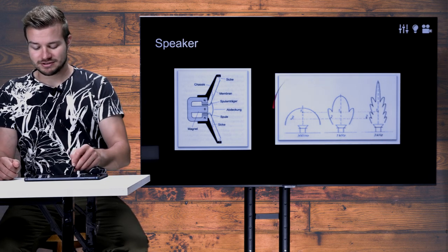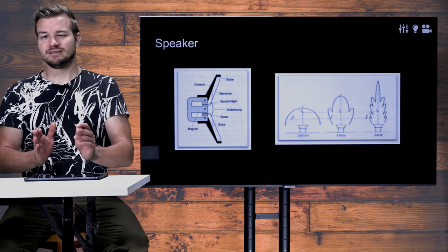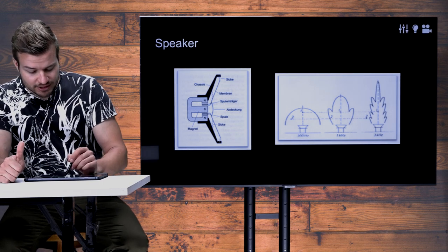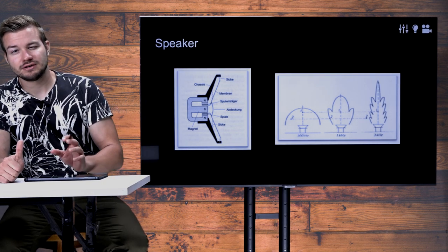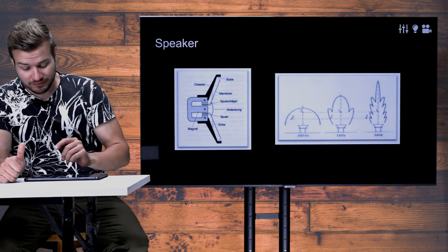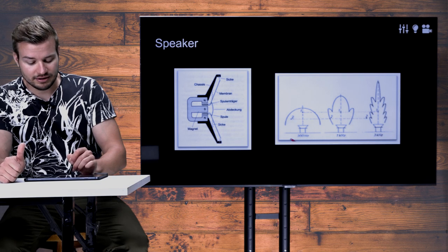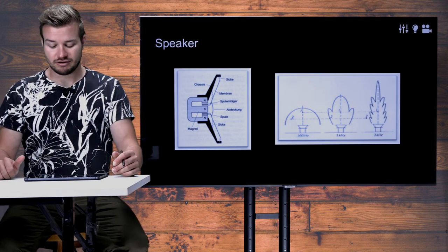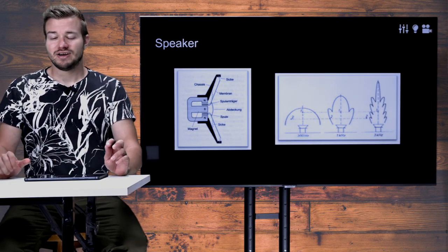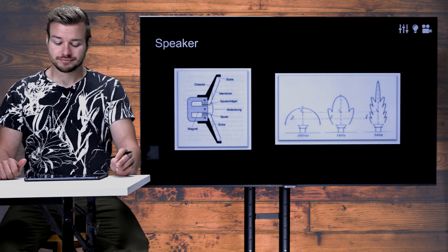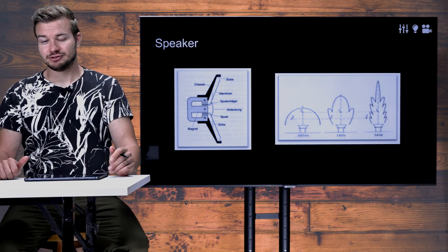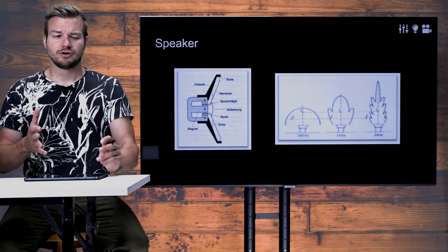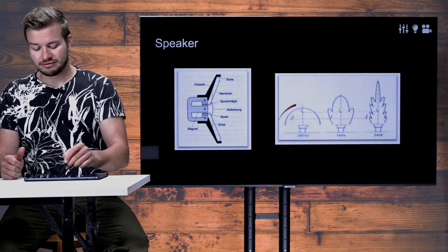One important thing to consider about speakers is their directionality and angle. It depends a little on frequency how the sound spreads into the room. If we send a frequency which is very low — around 200 Hz or lower — the sound distributes almost equally in all directions. That is also why it is not very important where you place your subwoofer or bass speaker, because as a human you cannot really hear where the sound is coming from.